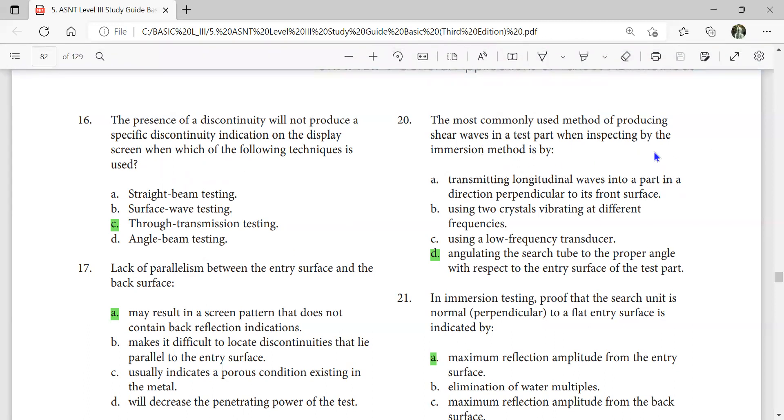The most commonly used method for producing shear waves in a test part when inspecting by the immersion method is by angulating the search tube to the proper angle with respect to the entry surface of the test part. You have to angulate based on how much shear wave you need on the steel surface.